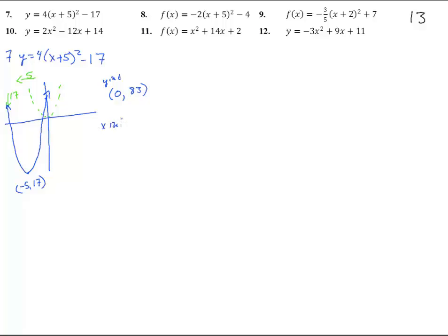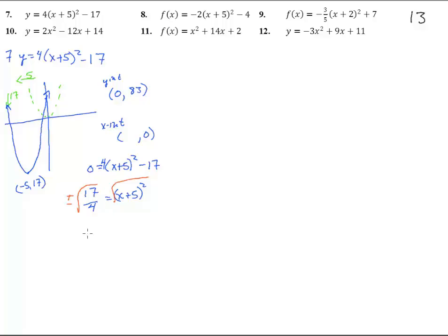So the y-intercept is at (0, 83). The x-intercepts happen where y equals 0, so we have 0 equals 4 times the quantity x plus 5 squared minus 17. Add the 17 over, divide by 4, that's going to equal x plus 5 squared. Square root both sides — plus or minus — and we get plus or minus the square root of 17 over 2. Then subtract 5 from both sides, so we get x equals negative 5 plus or minus the square root of 17 over 2.